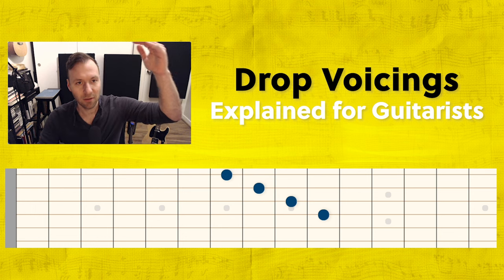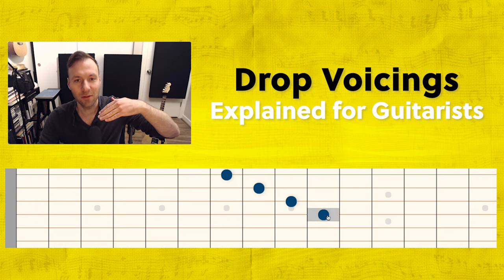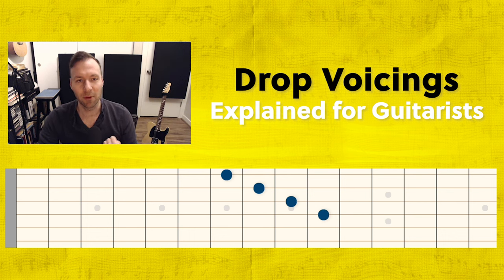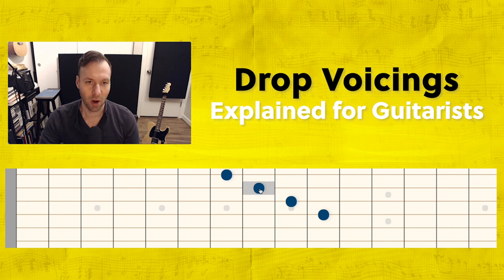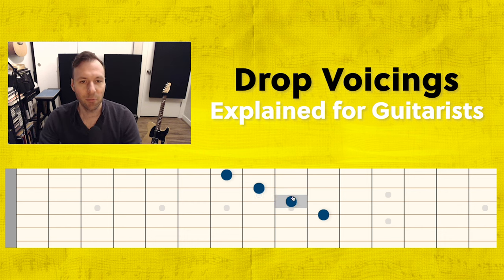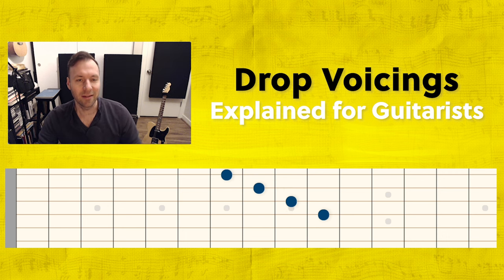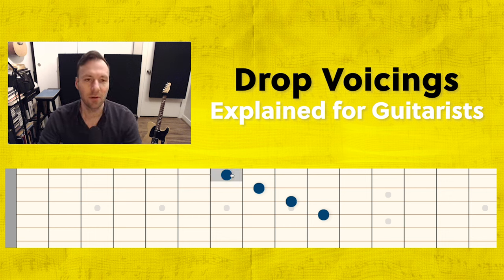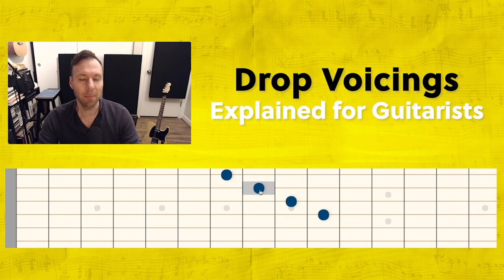A drop two voicing means that we take the second note from the top. If you start counting from the highest note - one - this is the highest note, this is the second from the highest note, and that's the note we are dropping. Drop two means we're dropping the second from the highest note. Drop three means we're going to drop the third from the highest note. Just for these drop voicings, think of counting down from the highest note.